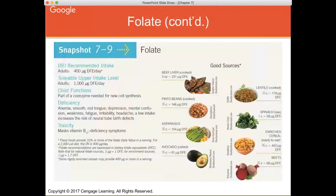Know that folate is part of coenzymes needed for cell synthesis and energy metabolism. Deficiency in adults promotes anemia — red blood cells lose their ability to carry oxygen. It also causes red tongue, depression, mental confusion, and weakness. Toxicity: remember it masks a B12 deficiency. Good sources are fortified foods and grains, leafy greens, and beef or chicken liver. Folate is fortified in the food supply as folic acid, which you'll see on supplement and cereal labels.